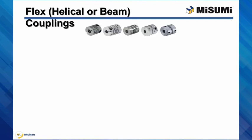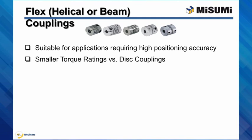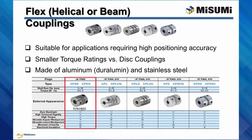Flex helical or beam couplings are a single piece of material that becomes flexible by removal of material along a spiral path, resulting in a flexible beam of helical shape. Since it's made of a single piece of material, this coupling does not exhibit the backlash found in some multi-piece couplings. It also allows for smooth torque transmission and can absorb large misalignments, making it suitable for high positioning accuracy applications. They are made of aluminum or dual aluminum and stainless steel, and are waterproof, oil resistant, and chemical resistant.